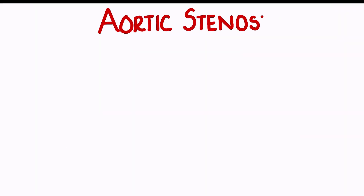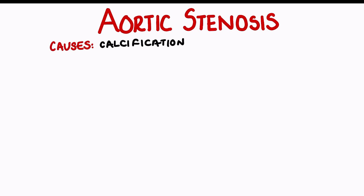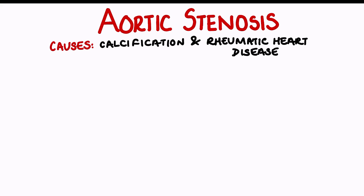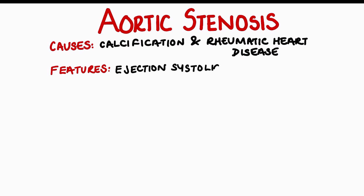Let's start with aortic stenosis. Stenosis means there is a narrowing of the valve. Causes include calcification and rheumatic heart disease, which makes the valve thick and difficult to function. This murmur is described as an ejection systolic murmur, best heard in the aortic region of the chest. As this valve pushes blood to the rest of the body, the abnormal sounds can also radiate to the carotids.